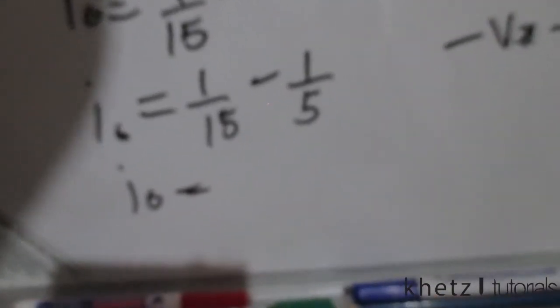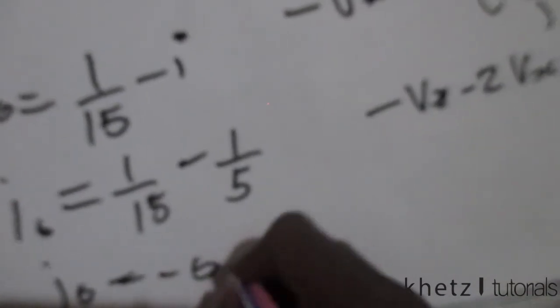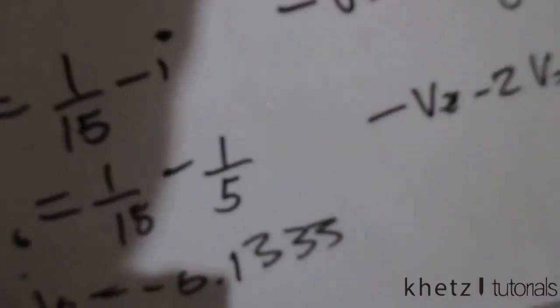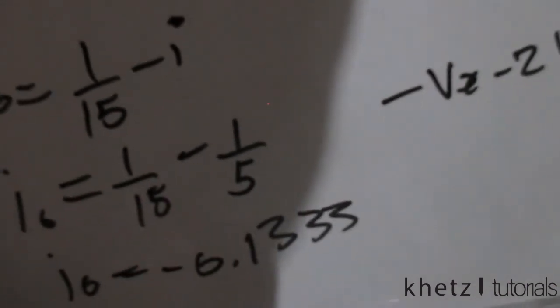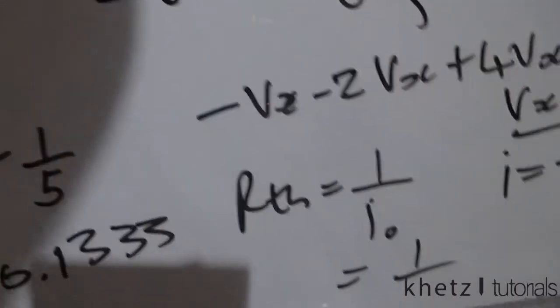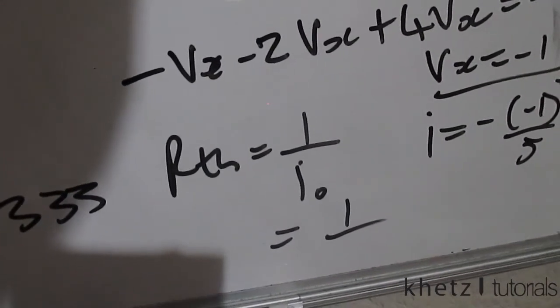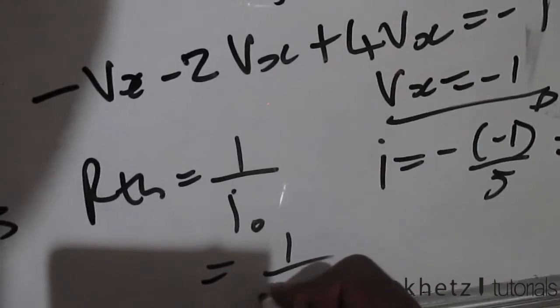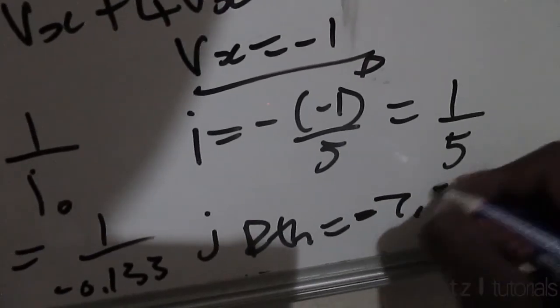Computing 1/15 minus 1/5: the decimal value is negative 0.1333 recurring. Now Rth equals 1 divided by io, so 1 divided by negative 0.1333, which gives Rth equal to negative 7.5 ohms.